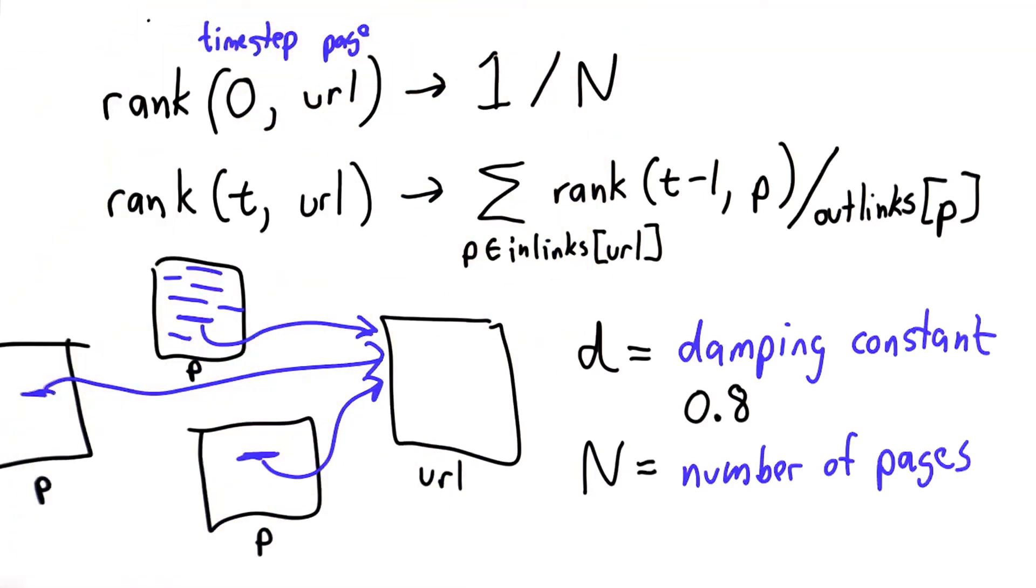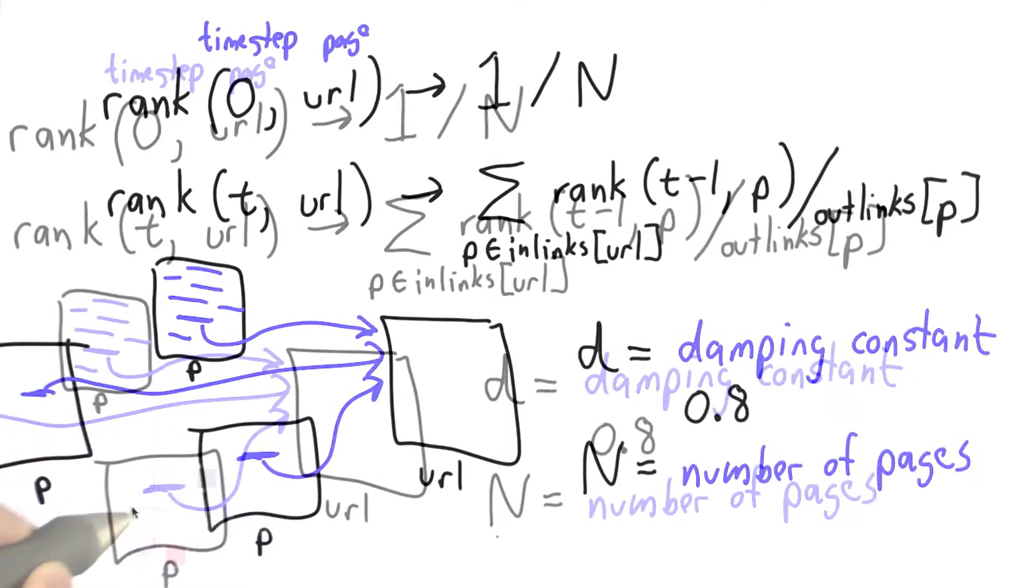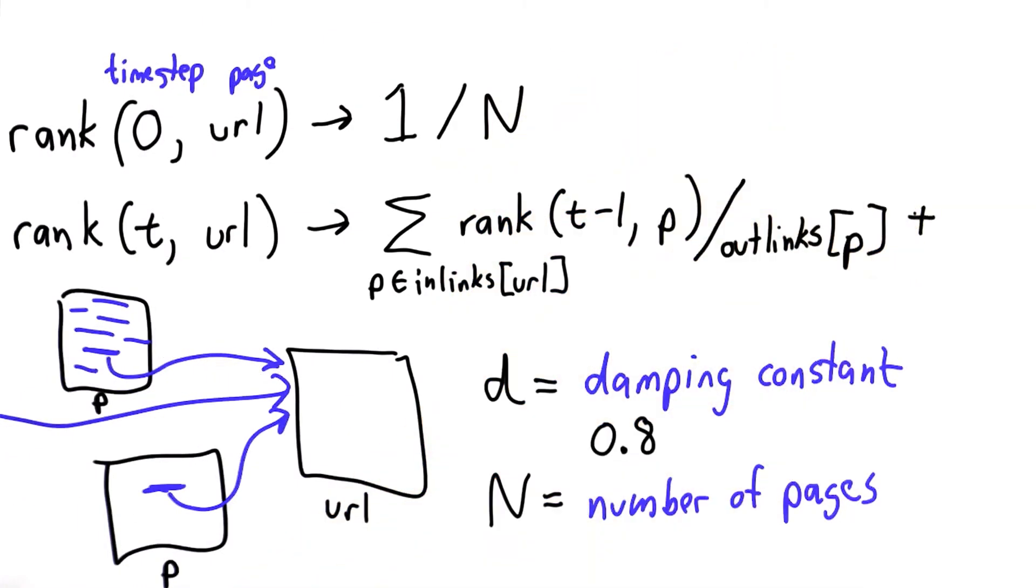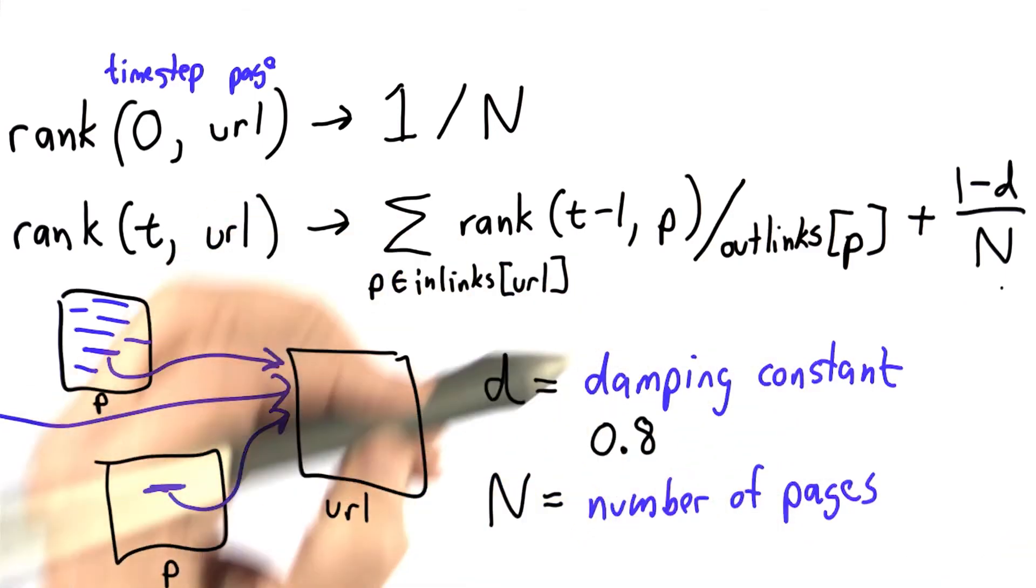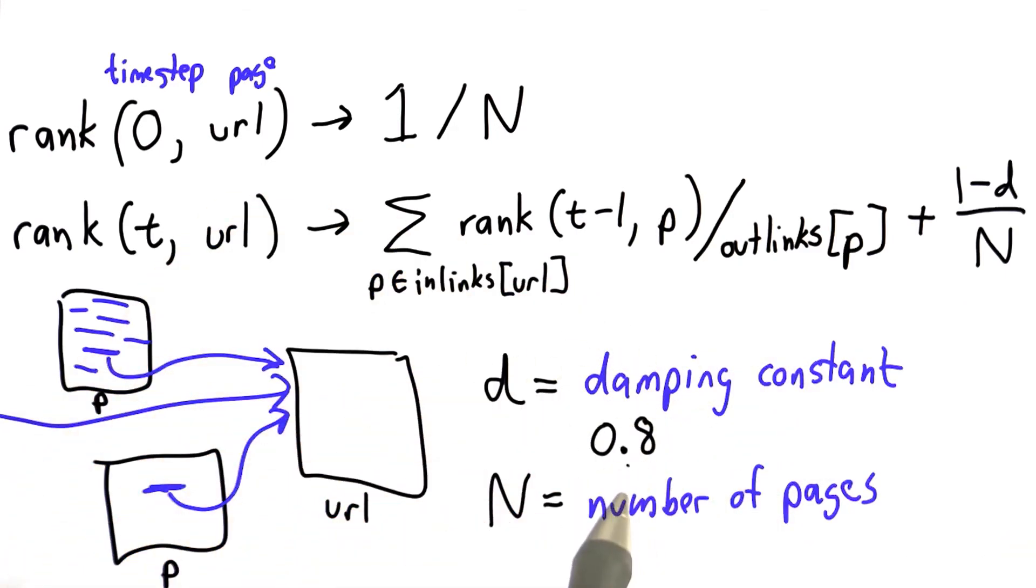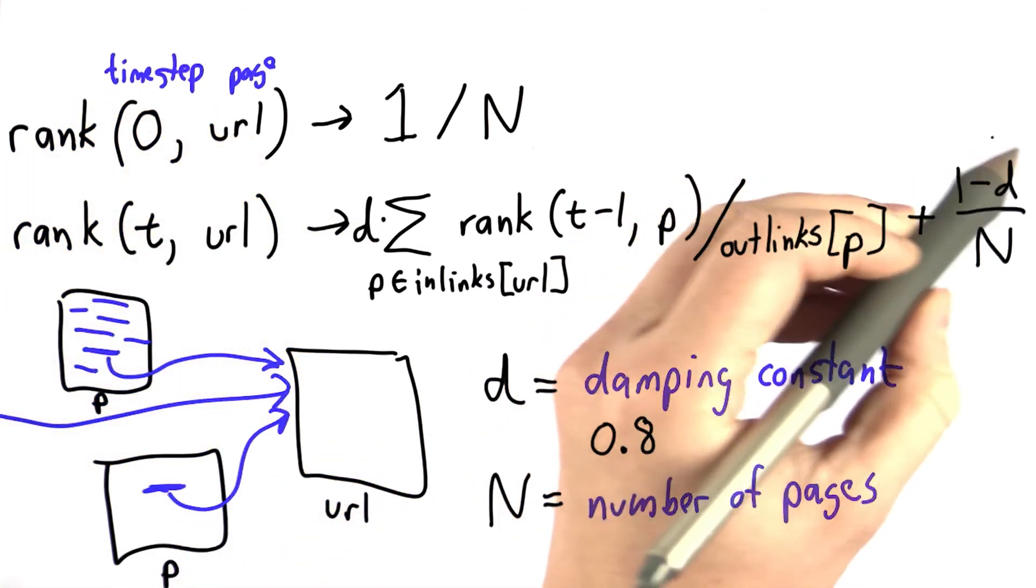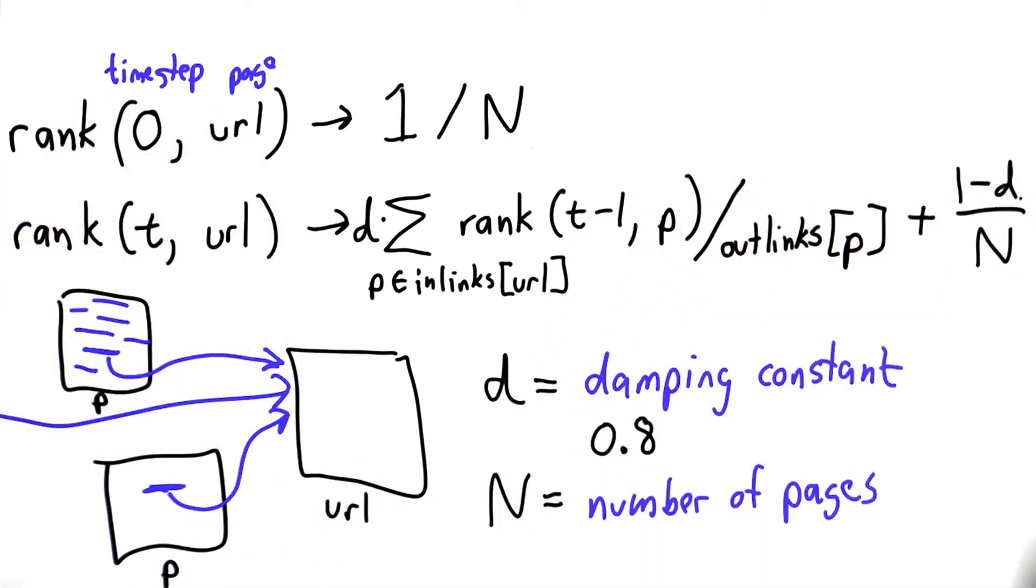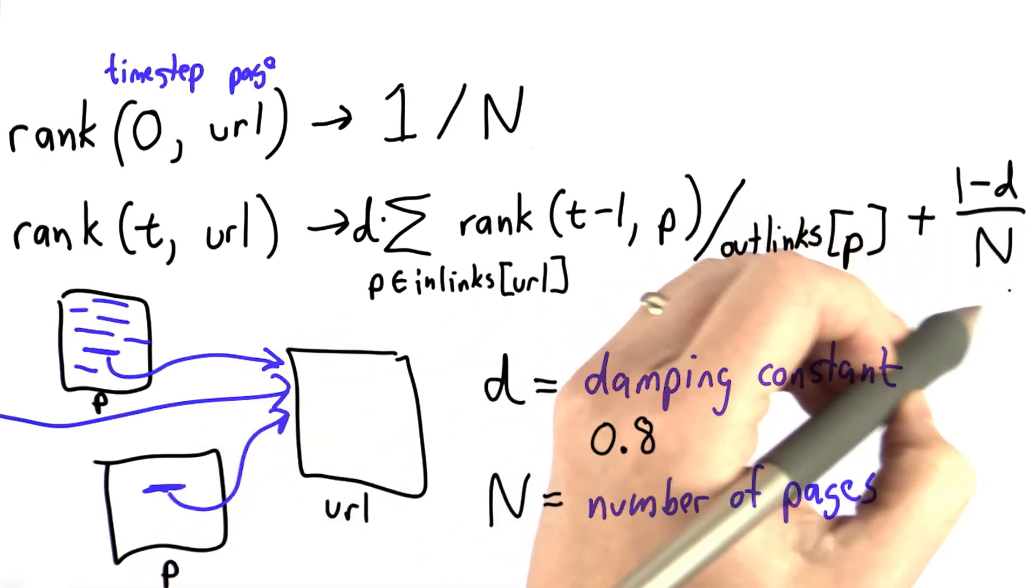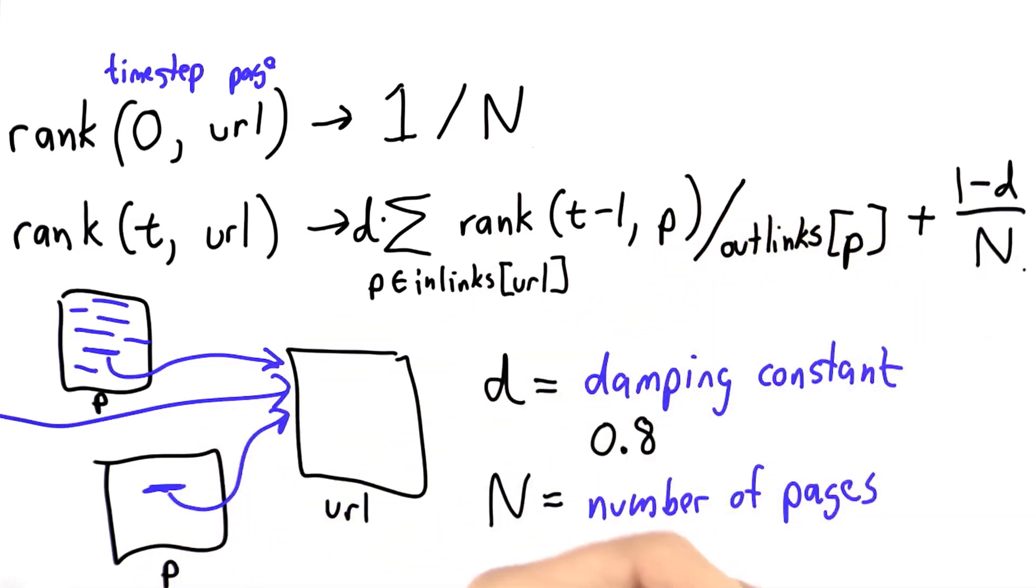The sum of the page ranks at the beginning will be 1. We're going to change the way we compute the rank by adding a value that gives us the sense of starting over. The value we're going to use is 1 minus d divided by N. That gives the notion that 0.8 of the time, we decide to follow a new page, so we multiply this by d. The times when we don't follow a new page, that's 1 minus d, we start over, and we divide that by N. That's the probability that this is the page that would be picked when we start over.